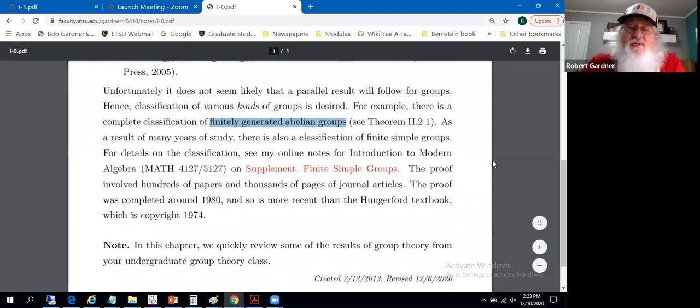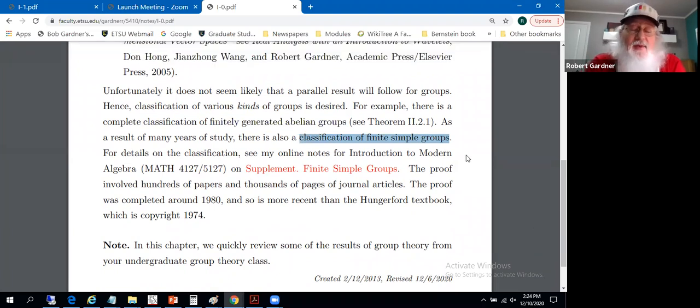Another result in that direction is the classification of finite simple groups. However, the proof of that is beyond the scope of the course. This was proved, classification of finite simple groups, the proof was concluded around 1980. Some details were trickling out until the end of the mid-80s. The textbook we're using, Hungerford's Algebra, copyright 1974.